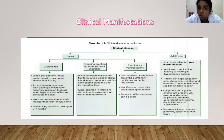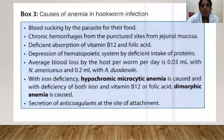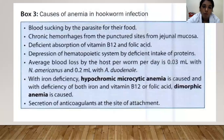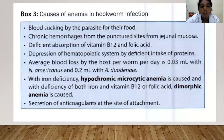Symptoms and signs of anemia include exertional dyspnea and palpitations. Severe hookworm anemia can lead to cardiac failure. Causes of anemia in hookworm infection include: blood sucking by the parasite, chronic hemorrhages from punctured jejunal mucosa, deficient absorption of vitamin B12 and folic acid, and depression of the hematopoietic system by deficient protein intake. Average blood loss per worm per day is 0.03 ml with Necator and 0.2 ml with Ancylostoma. Iron deficiency causes hypochromic microcytic anemia; combined iron and vitamin B12 or folic acid deficiency causes dimorphic anemia.